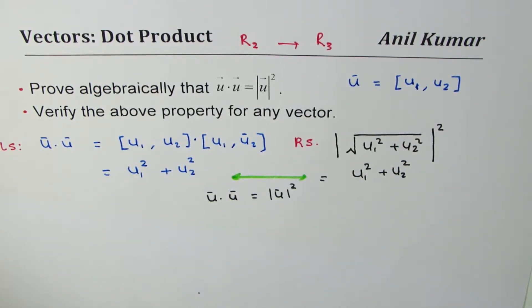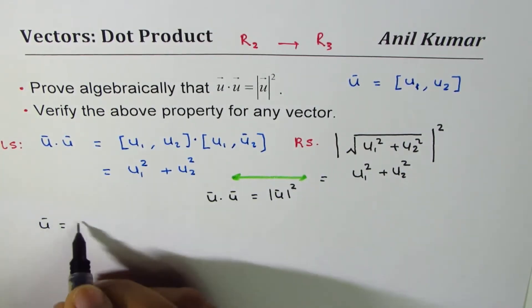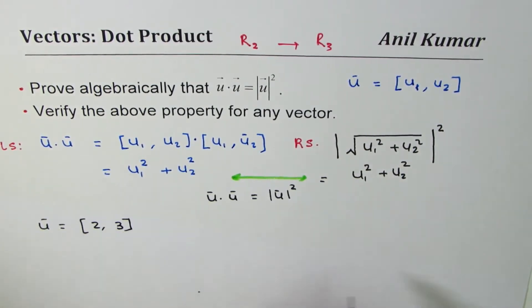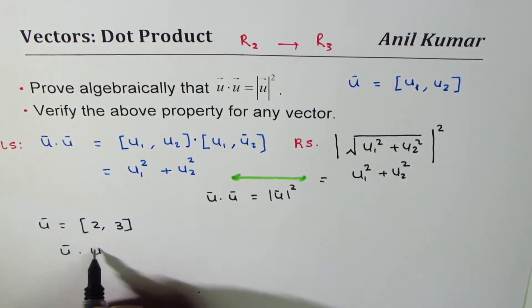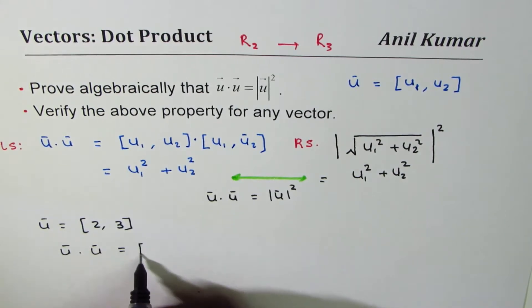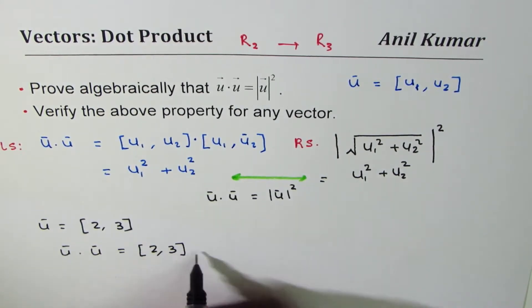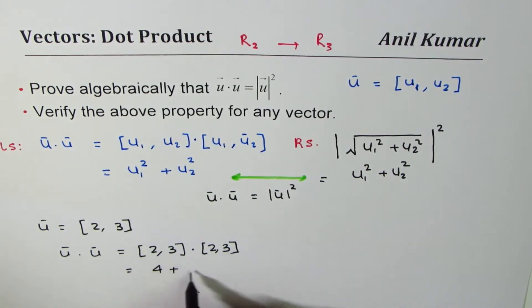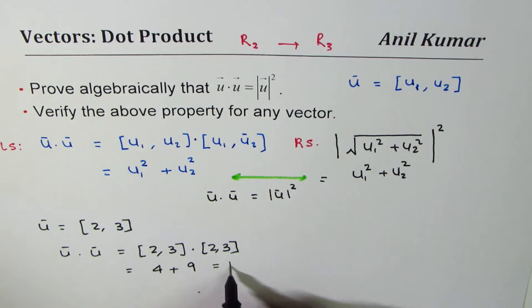Now let's verify the above property for any vector. Let's take a vector u as 2 comma 3. In that case, u dot u will be equal to 2 comma 3 dot 2 comma 3, and that is equal to 2 times 2 is 4 plus 3 times 3 which is 9, and that gives us 13.